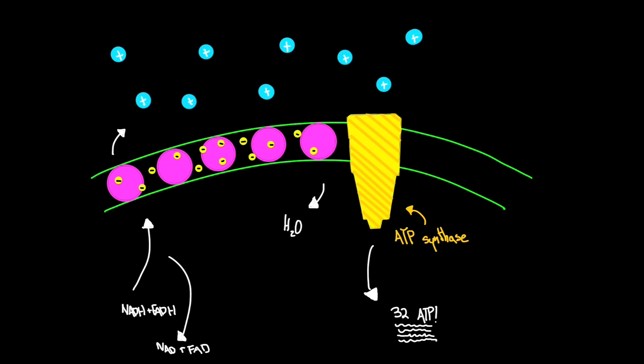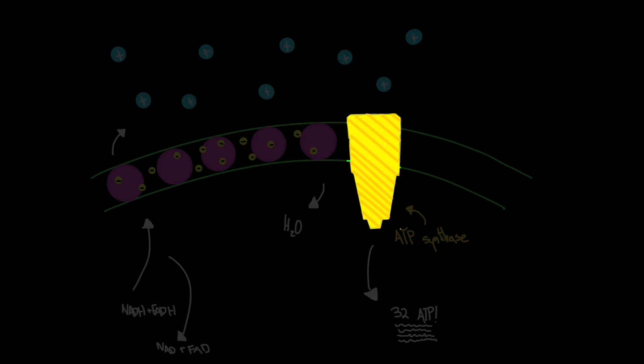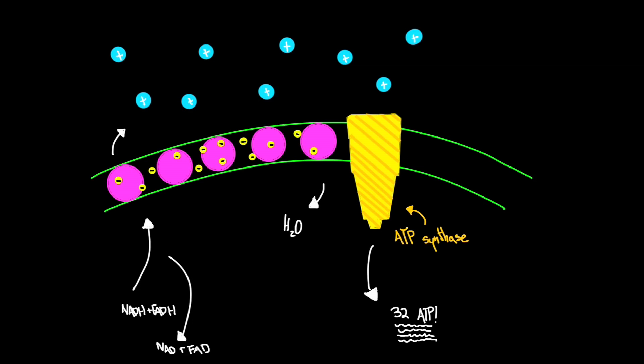Now all we have is a whole bunch of protons on one side of the cell and almost no protons on the other side of the cell. These protons really want to get back inside; that's a lot of energy there. ATP synthase is their only way back through.